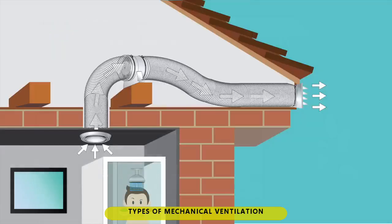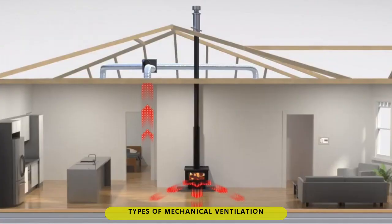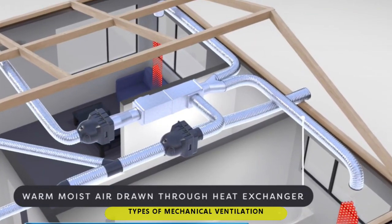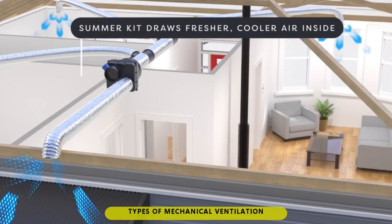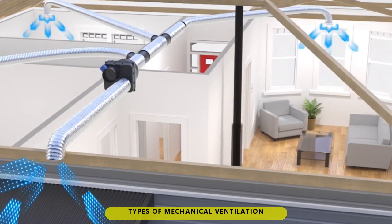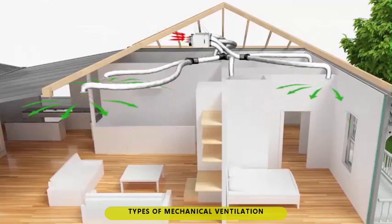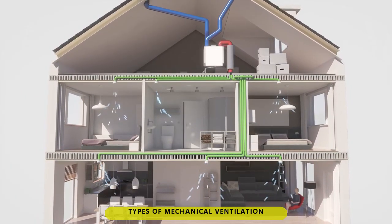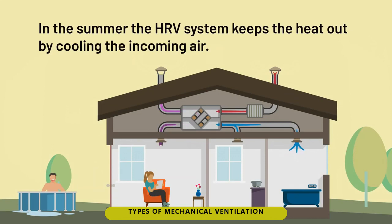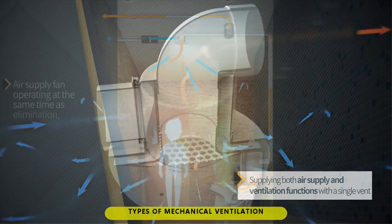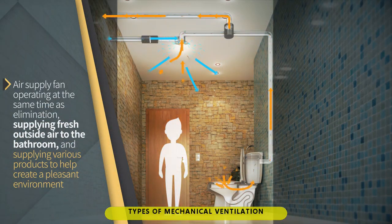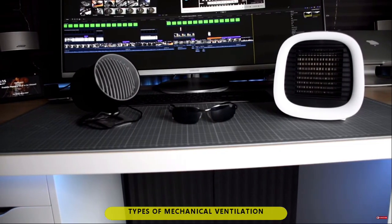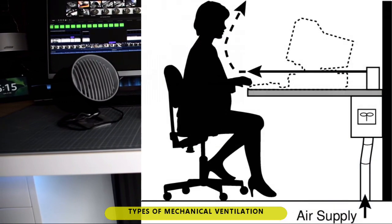Types of mechanical ventilation. 1. Exhaust: uses a mechanized fan attached to an air duct that sucks out unwanted air, to depressurize an indoor space. 2. Supply: uses both exhaust and supply ventilation that expels unwanted air and intakes fresh air — it neither pressurizes nor depressurizes an indoor space. 4. Spot: uses localized exhaust fan on small areas such as in a bathroom or range hood. 5. Task ambient conditioning: uses localized supply fan on individual workstations.